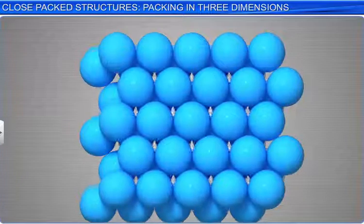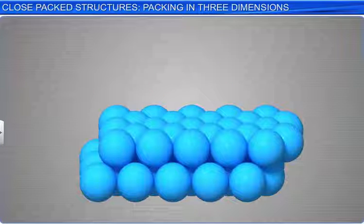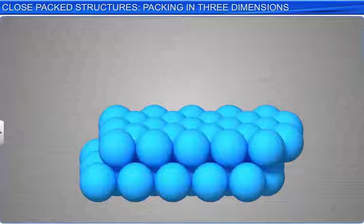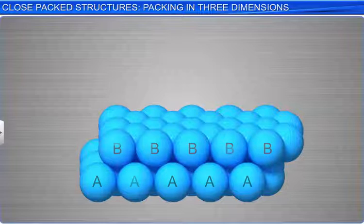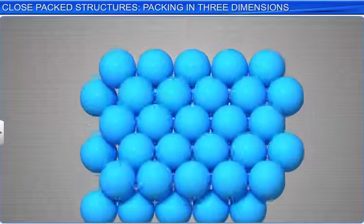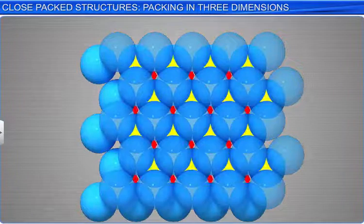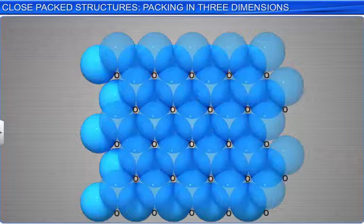As the spheres of the two layers are aligned differently, let the arrangement of spheres in the first layer be referred to as A type and in the second layer as B type. A closer look at the arrangement indicates the formation of two different kinds of voids, marked as O and T.